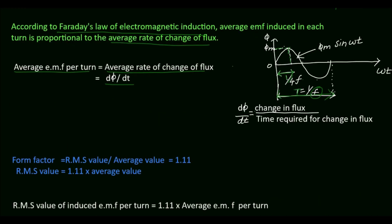dφ/dt is equal to the change in flux divided by the time required for that change in flux. If we consider 1/4 of the cycle, the flux is changing from 0 to φm. So the change in flux is φm minus 0, divided by the time required for the change in flux which is 1/(4f). This equals φm × 4f. So the average EMF per turn is equal to dφ/dt, which is equal to 4f·φm volts.